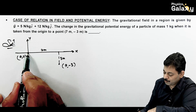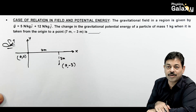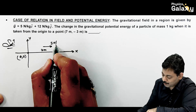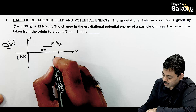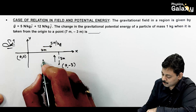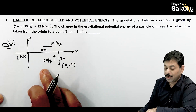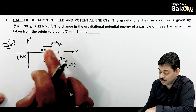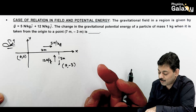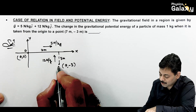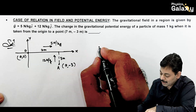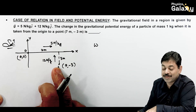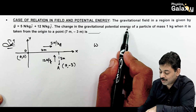The gravitational field in the x direction is 5 N/kg and in the y direction it is 12 N/kg upward. We know that gravitational potential decreases in the direction of the gravitational field. When we go from origin O to point A at (7, -3), we can directly write the work done per unit mass.